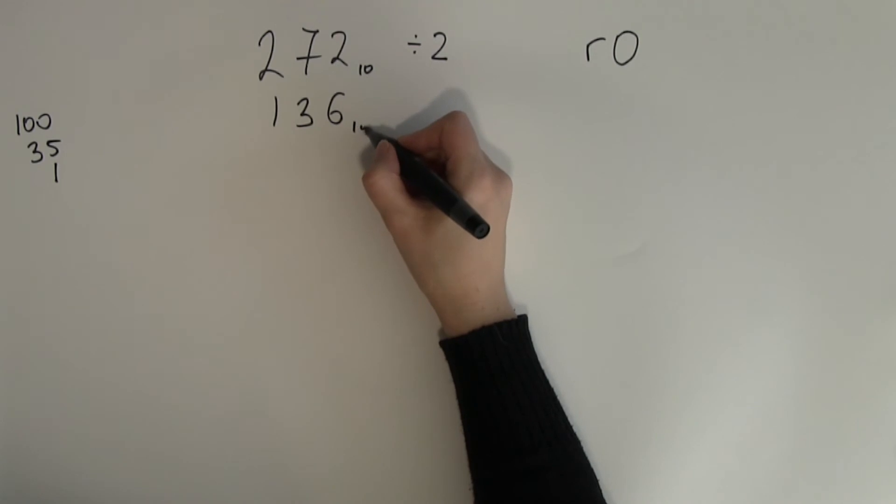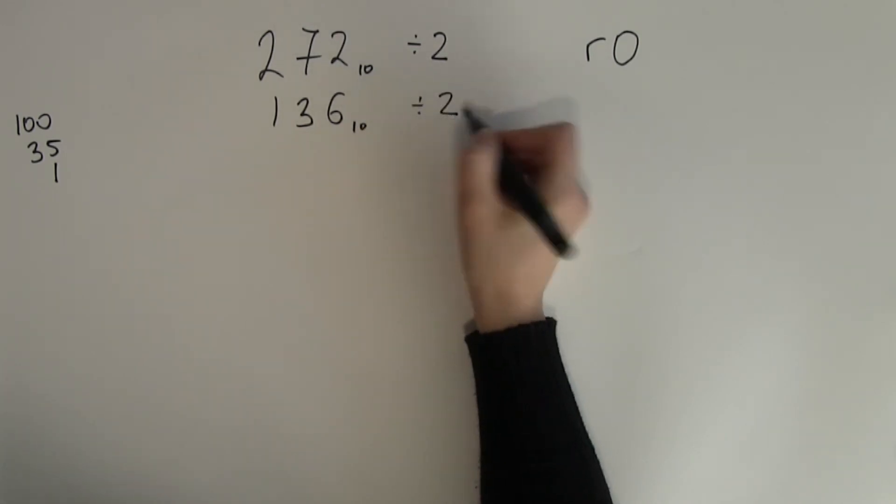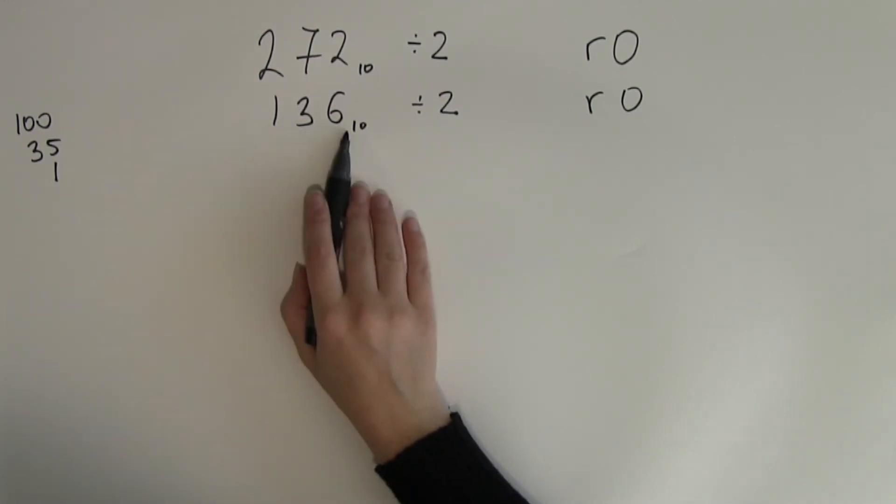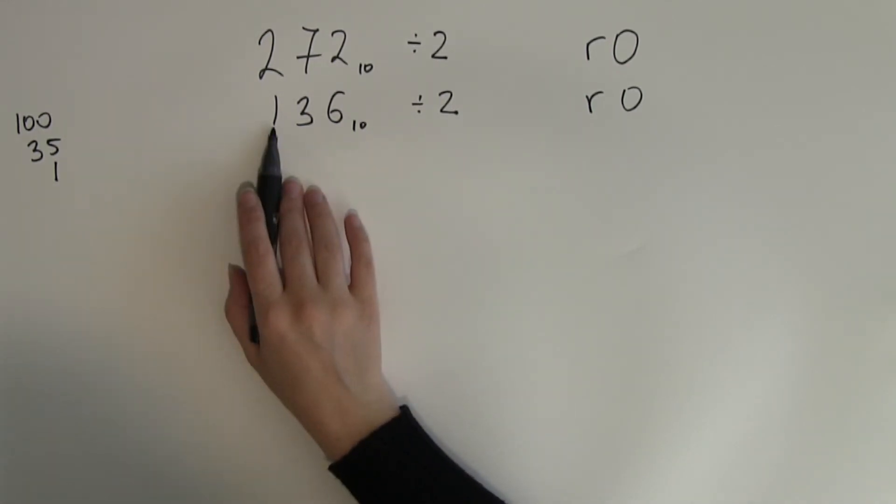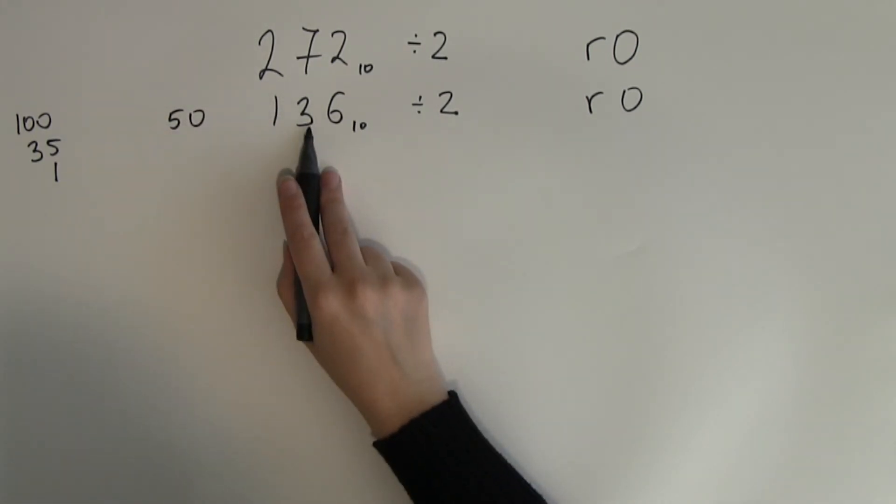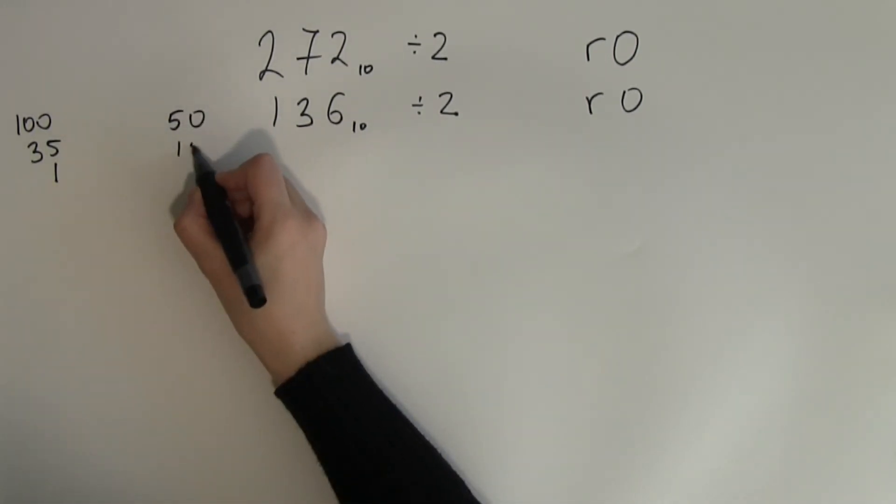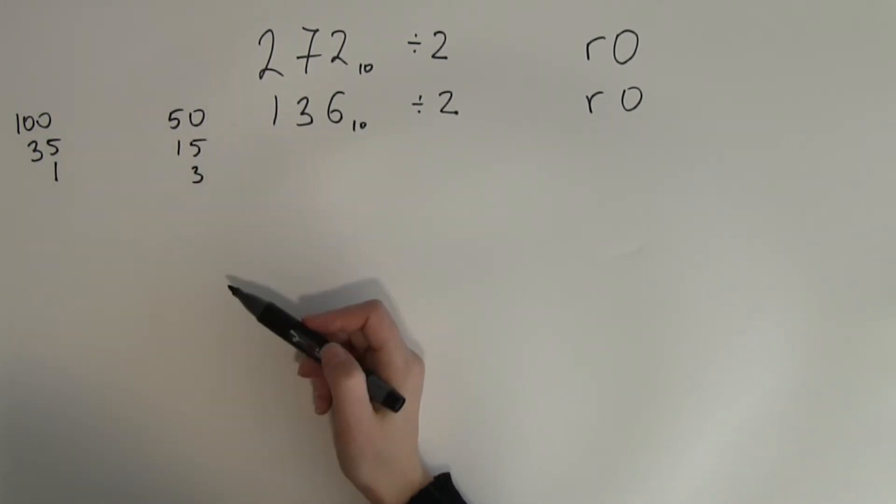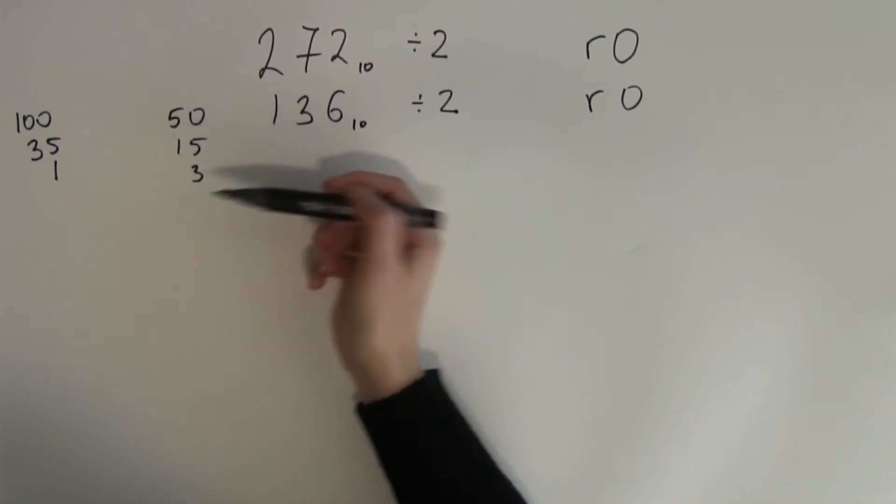So again divide that by 2. Remainder again will be 0 because it's again an even number. What's the half of 100? Half of 100 is 50. What's the half of 30? Half of 30 is 15. And what's the half of 6? It's 3. So all together this is 68.